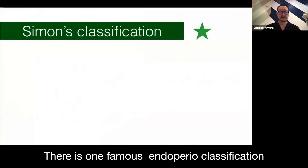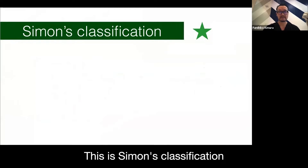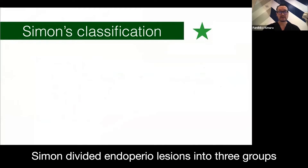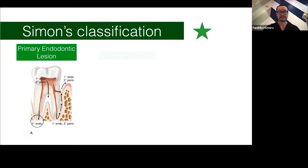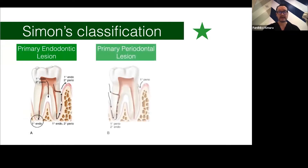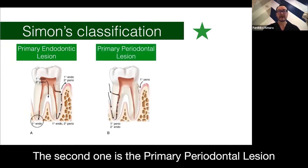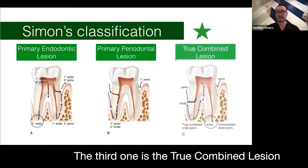There is one famous endopelio classification — Simon's classification. Simon divided endopelio regions into three groups: the first is the primary endodontic lesion, the second is the primary periodontal lesion, and the third is the true combined lesion.